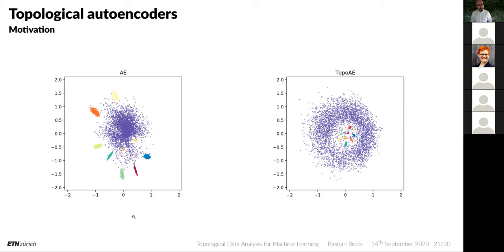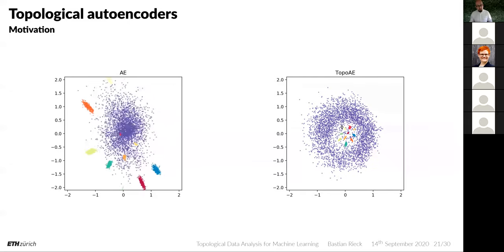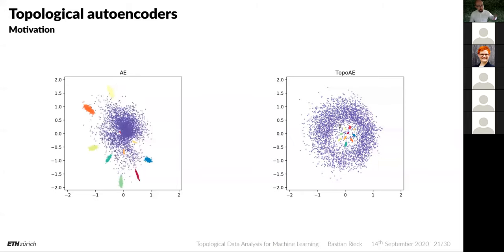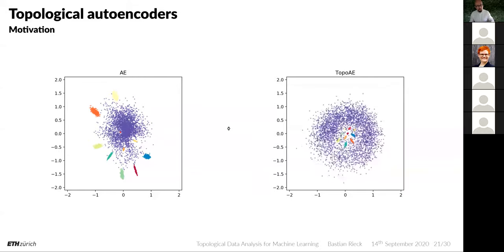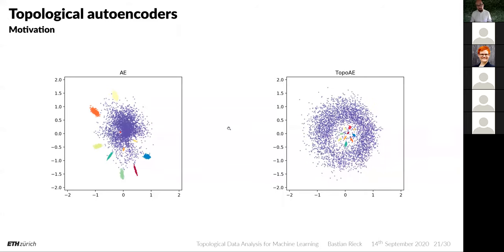The example uses high-dimensional spheres nested inside a larger enclosing sphere. With a regular autoencoder, these spheres are pushed apart and the nesting relationship is lost. With the topological autoencoder, you clearly see the big sphere living at a different scale, subsuming the original low-dimensional spheres in the latent space — the topology of the input is preserved.